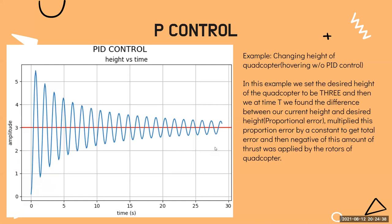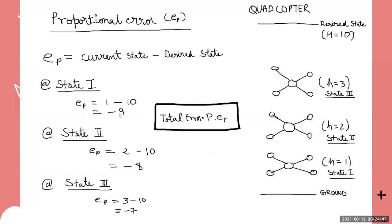When the error is minus 9 with P equals 1, the total error is minus 9, so we apply minus 9 m/s at state one. At state three it's minus 7 m/s. The farther we are, the more force or speed we apply; the closer we get, the lower the speed. When it reaches height equals 10, the error is 10 minus 10 equals zero, so the force or speed of the wings goes to zero. The bot will reach the center very fast — this is P control.